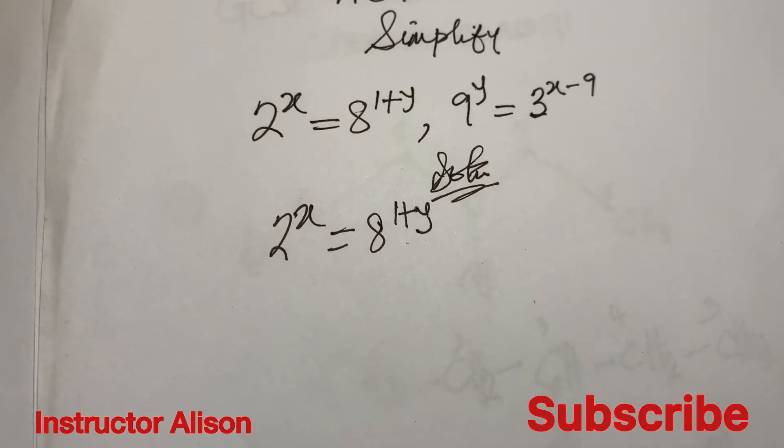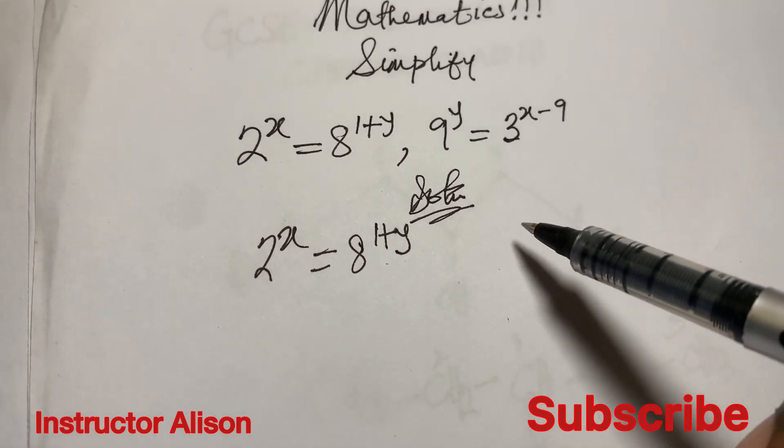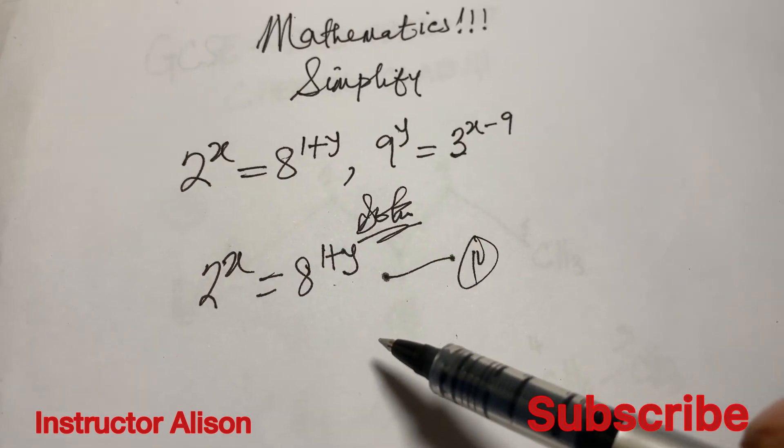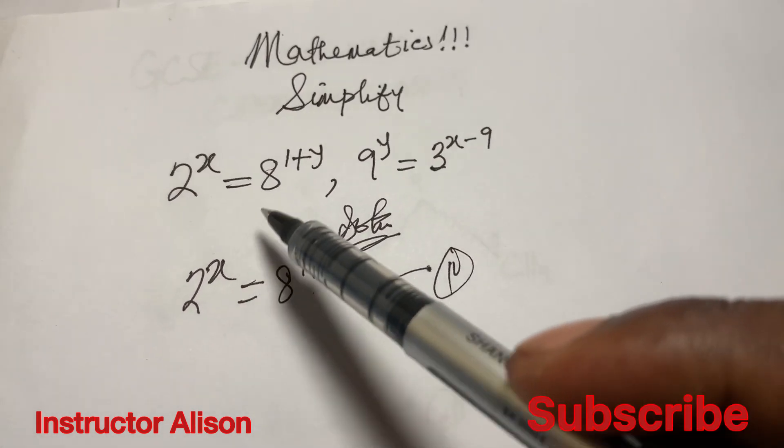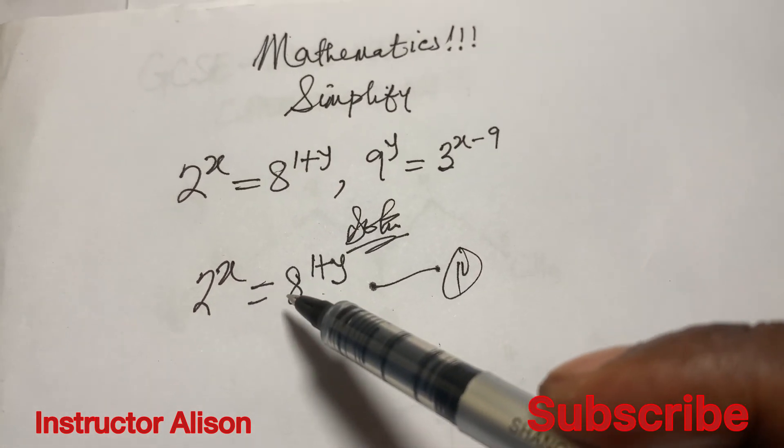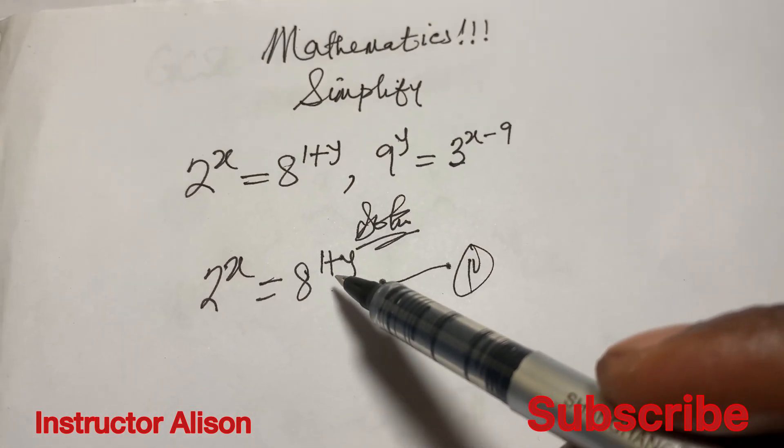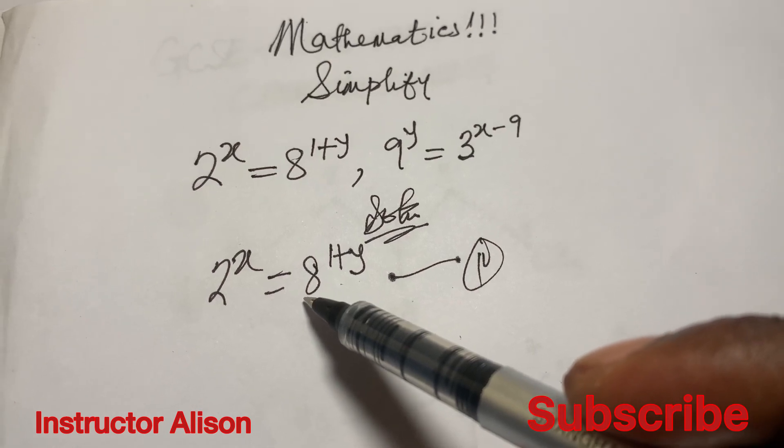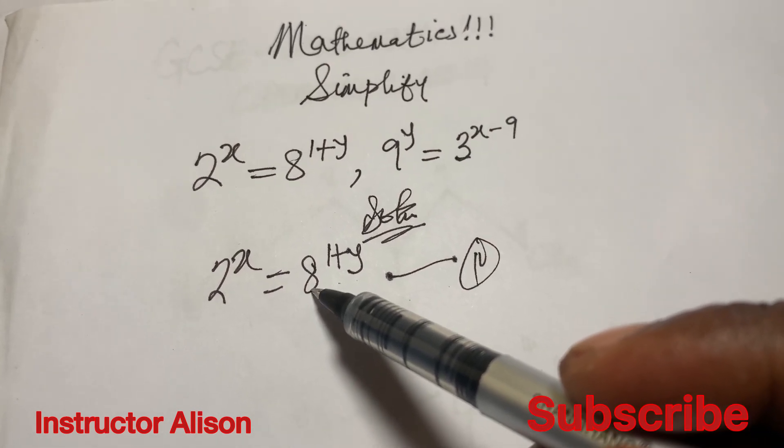Let's resolve this problem. You can name it equation 1, just for reference purposes. For this first problem we have 2^x = 8^(1+y). We need to reduce this.